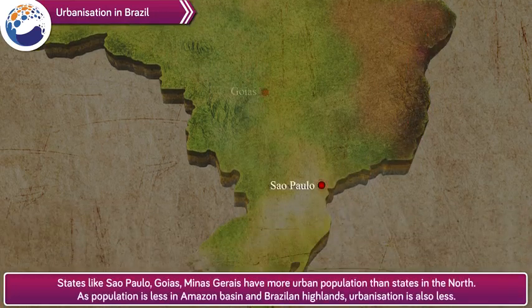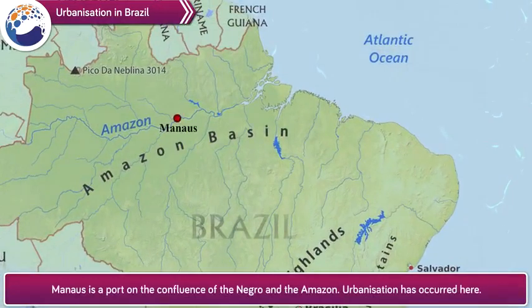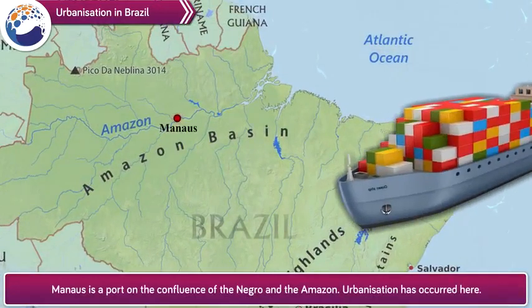States like São Paulo, Goiás, and Minas Gerais have more urban population than states in the north. As population is less in the Amazon basin and Brazilian highlands, urbanization is also less. In this part, Manaus is a port on the confluence of the Negro and the Amazon rivers, and urbanization has occurred there.